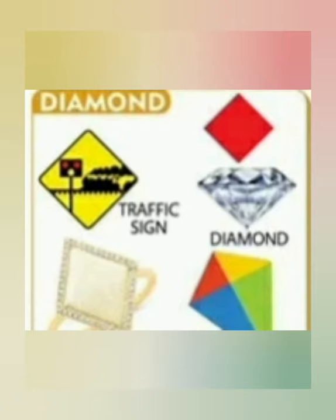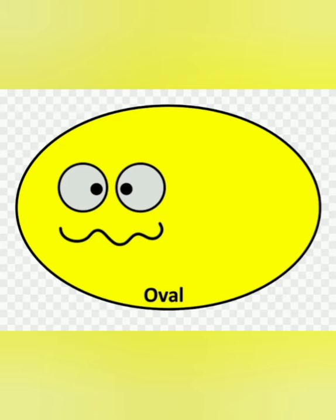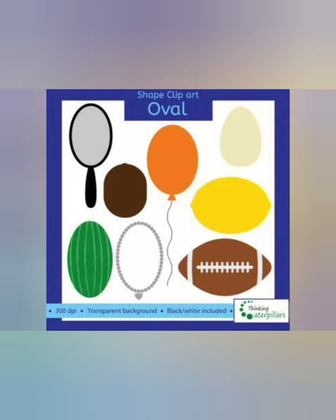This is oval. Here you can see some objects which are oval in shape: a badminton bat, kiwi, balloon, egg, lemon, rugby ball, necklace, and watermelon — all these have an oval shape at their base.